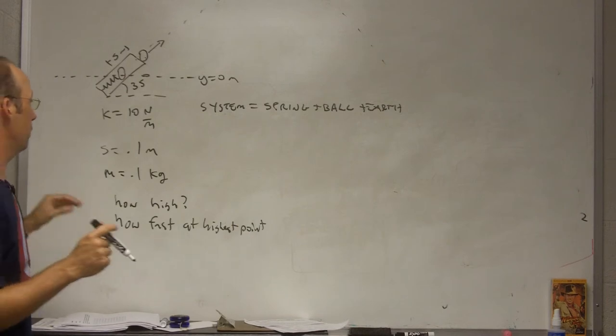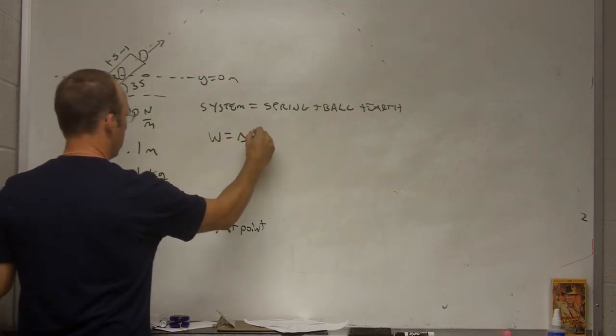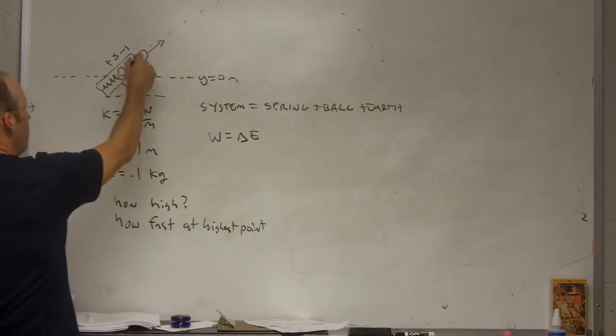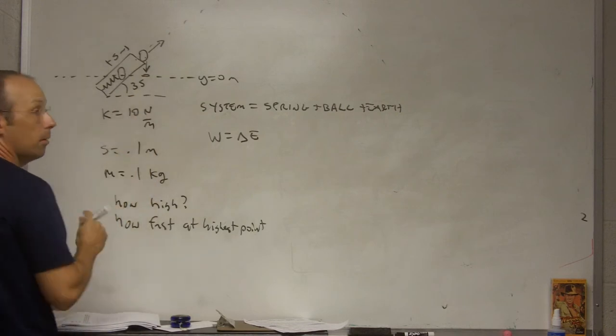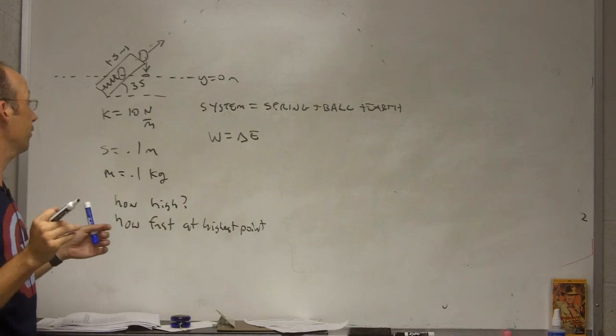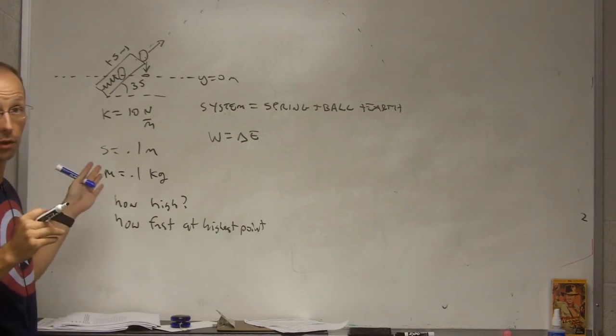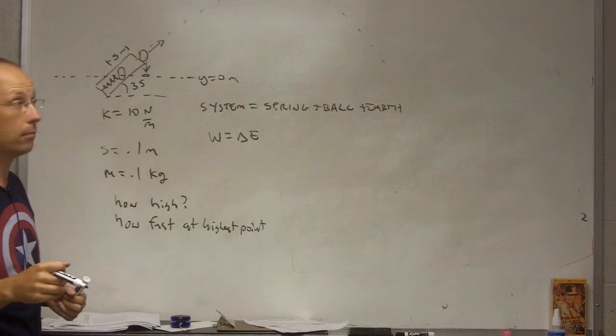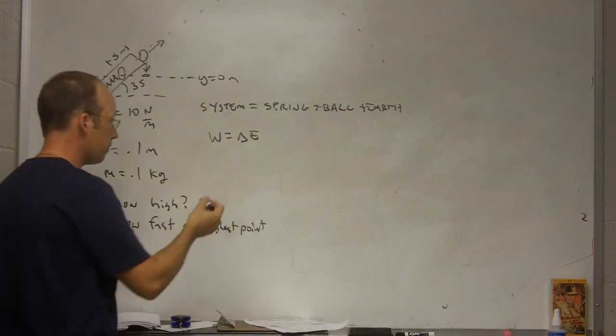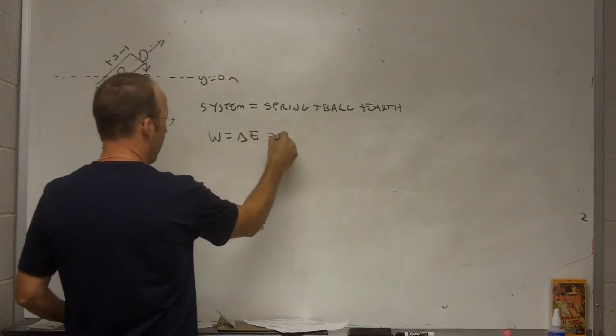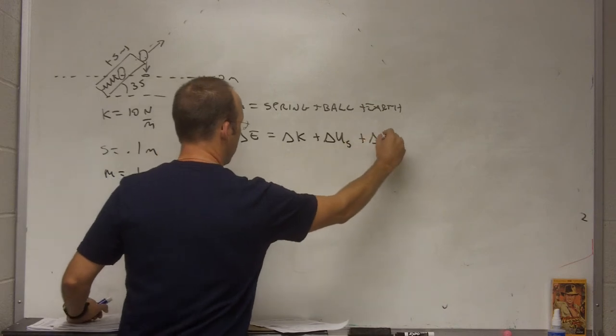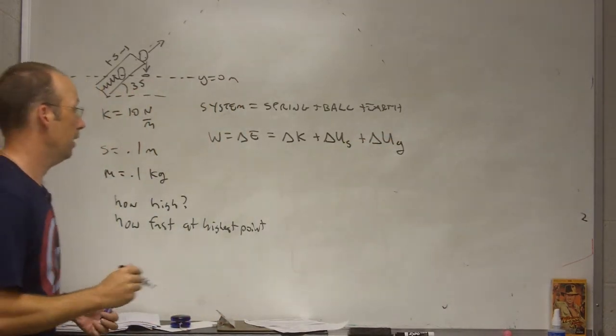So, if that's the case, what's the work done? Well, what's acting on the ball during this interval right here? The whole time I have gravity, but gravity doesn't do any work because it's part of the system. The gravitational force from the earth is part of the system. The spring exerts a force on it, but that's part of the system. So, there's nothing that does any work on the system, so there's no work done. So, my change in energy, I have change in kinetic, change in spring potential, and change in gravitational potential equals zero.